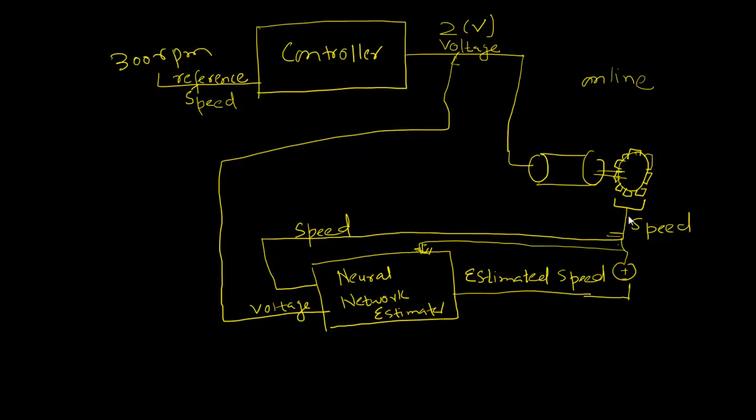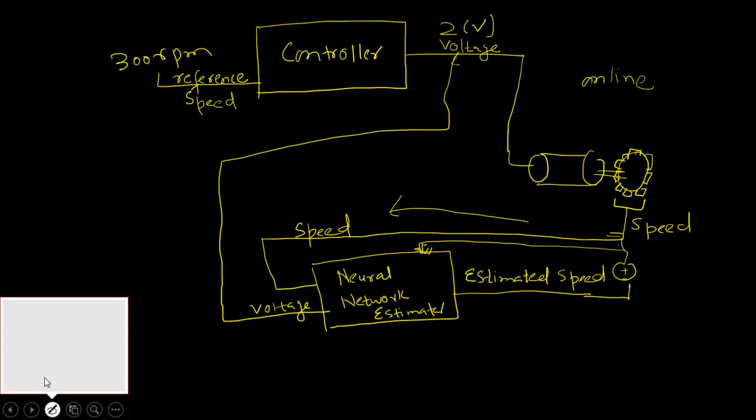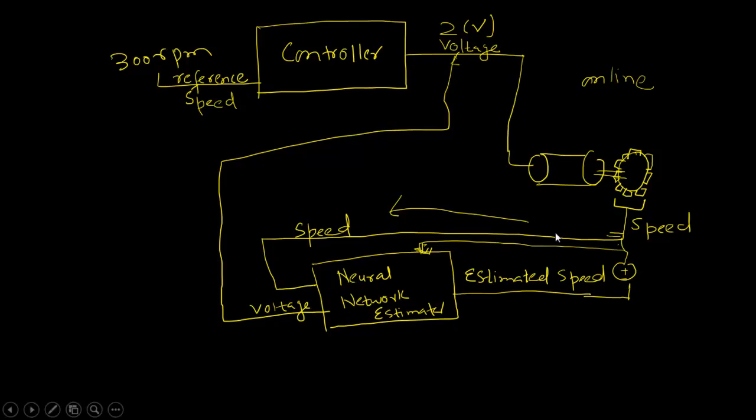And here we have got an optical sensor. This optical sensor gives us the speed, and this speed is fed as an input to the neural network estimator, which is another neural network. And this is actually what we use for the online training.